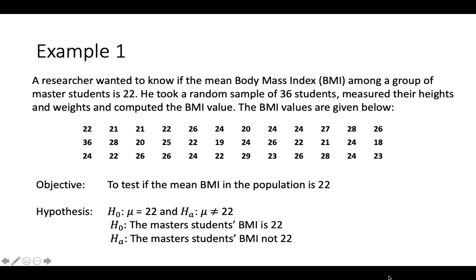So here's an example. A researcher wanted to know if the mean BMI among a group of master's students is 22. He took a random sample of 36 students, measured their heights and weights and computed the BMI value. The BMI values are given below. Objective is to test if the mean BMI in the population is 22. So the hypothesis for the H-null is the master's student's BMI is 22, and the alternative hypothesis is the master's student's BMI is not 22.